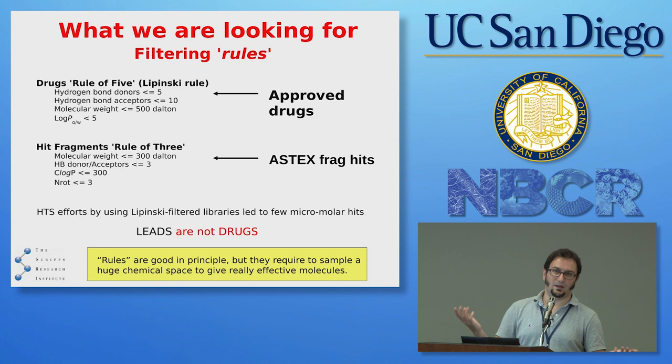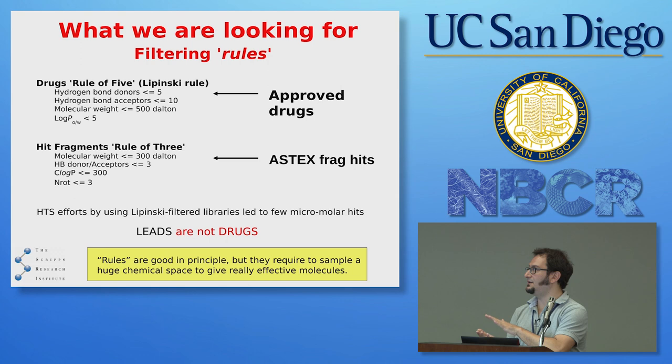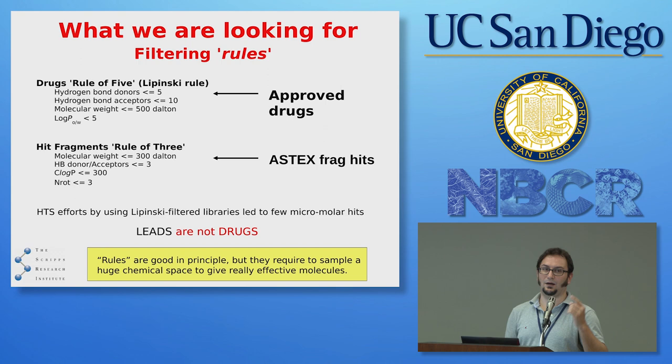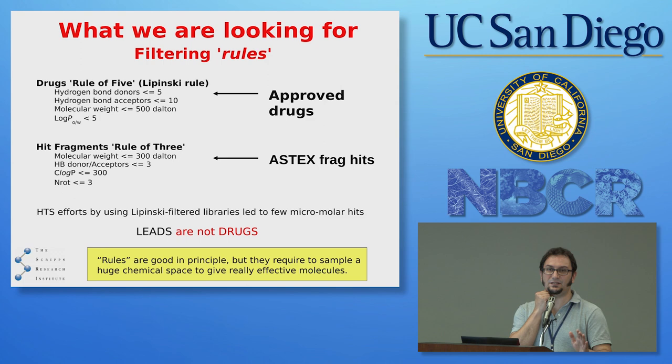The problem is that these rules didn't work out because people were applying them too strictly. Retrospectively it's easy to understand what a drug is, but if you try to find drugs by strictly following the Lipinski Rule of Five, you'd need to sample the entire chemical space — and that's not going to happen. Applying these rules too strictly didn't lead to real drugs being identified through pre-filtering. Keep this in mind — it's very popular, but you don't want to be too strict in applying these rules.